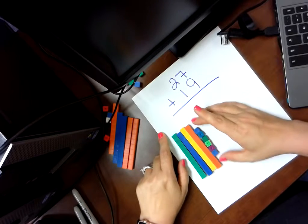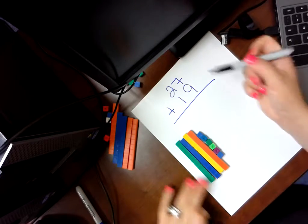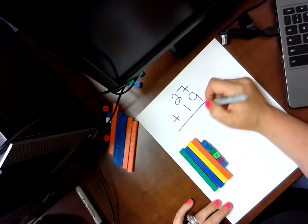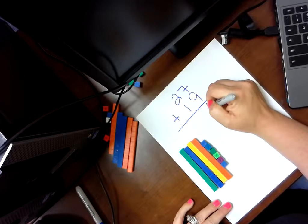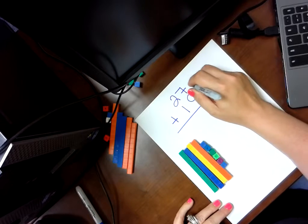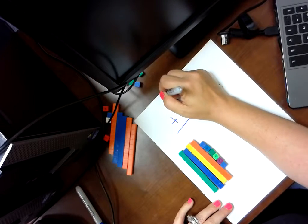So I'm set. 27 plus 19 is 46. I have to make sure I'm correct. 7 plus 9 is 16. But I can't put 16 here. I have to take the 6 and 16. And I take the 1 and I go all the way up here and I put it in here.